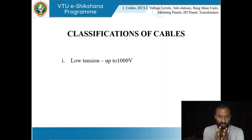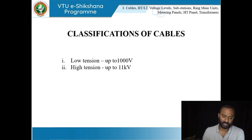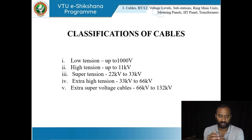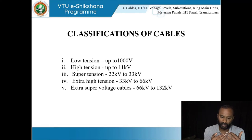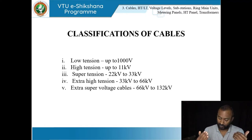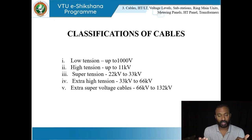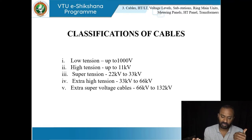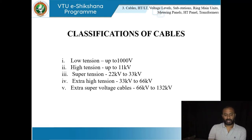Moving on to classification of cables: there are five classifications based on voltage range. Low tension is up to 1,000 volts (1 kV). High tension is from 1,000 to 11,000 volts. Super tension ranges from 22 kV to 33 kV. Extra high tension is from 33 kV to 66 kV. Extra super voltage cables range from 66 kV to 132 kV and further.